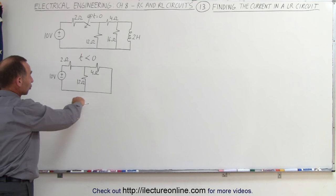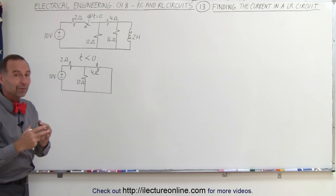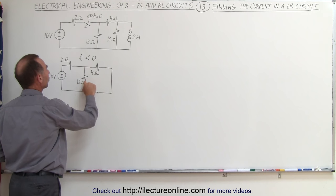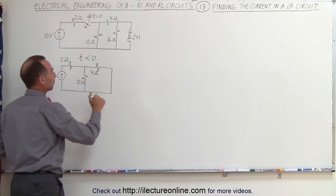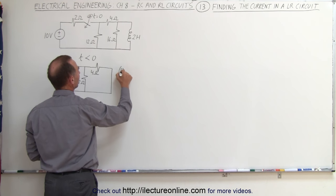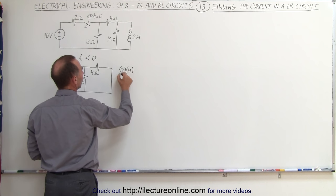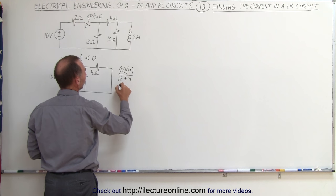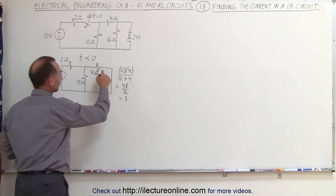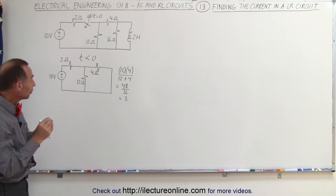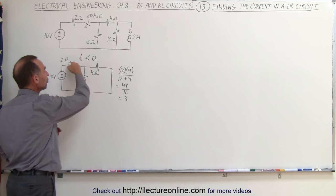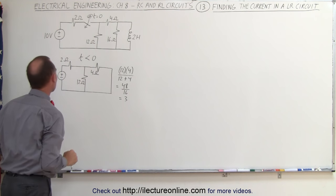Now what we need to do is figure out how much current flows in the circuit. We need to simplify further and find the equivalent circuit. Notice that these are two resistors in parallel — from this branch point to this branch point — so the equivalent resistance of these two is the product over the sum. That would be 12 times 4 divided by 12 plus 4, which equals 48 divided by 16, which equals 3. These two resistors then form a single equivalent resistance of 3 ohms, added to the 2 ohms, giving us a 5 ohm resistance for this 10 volt source.